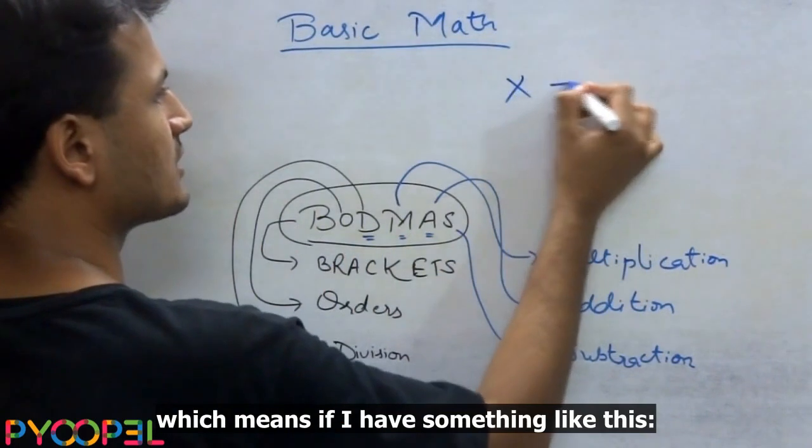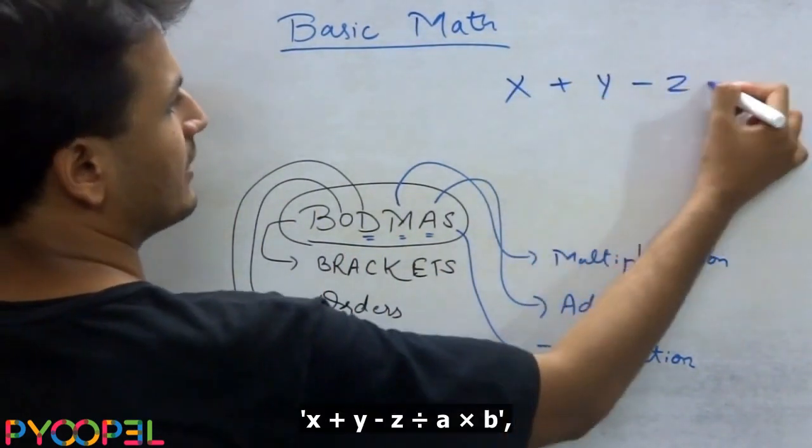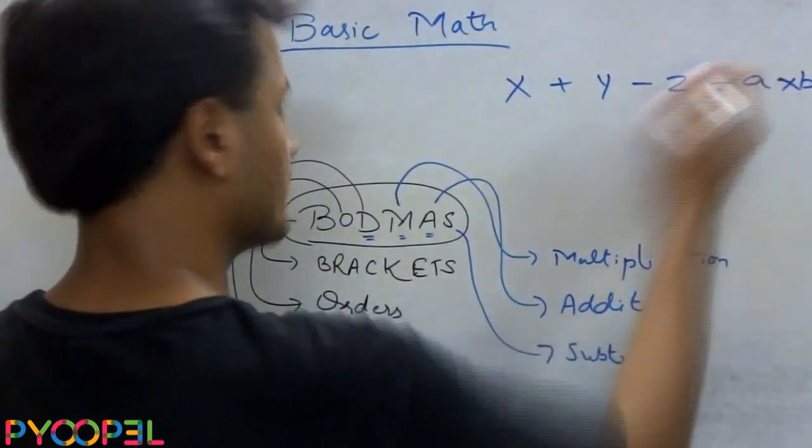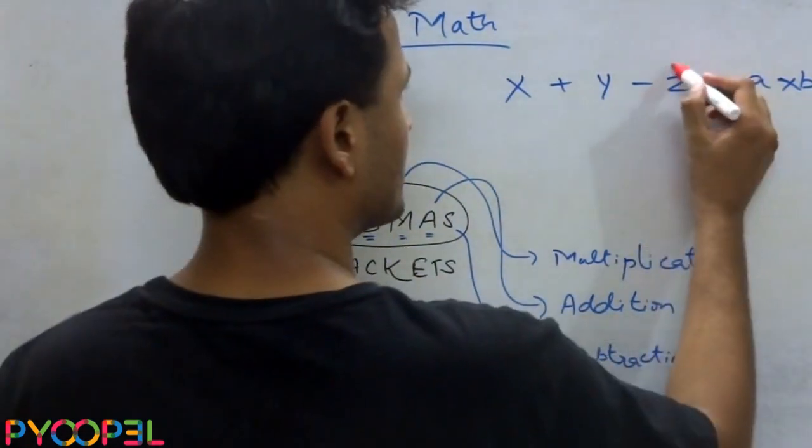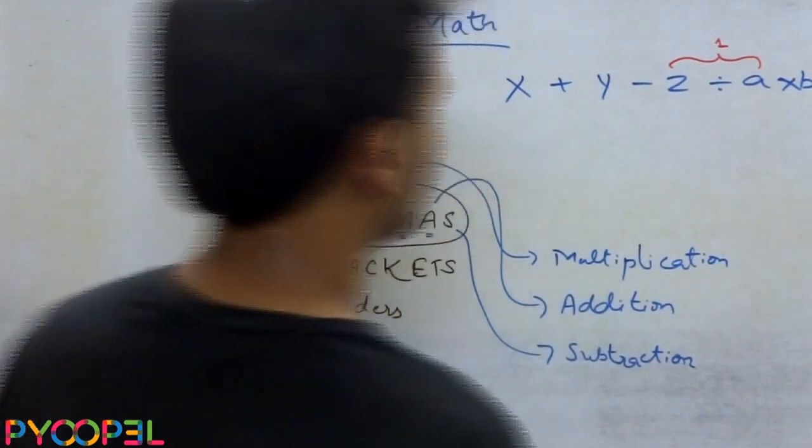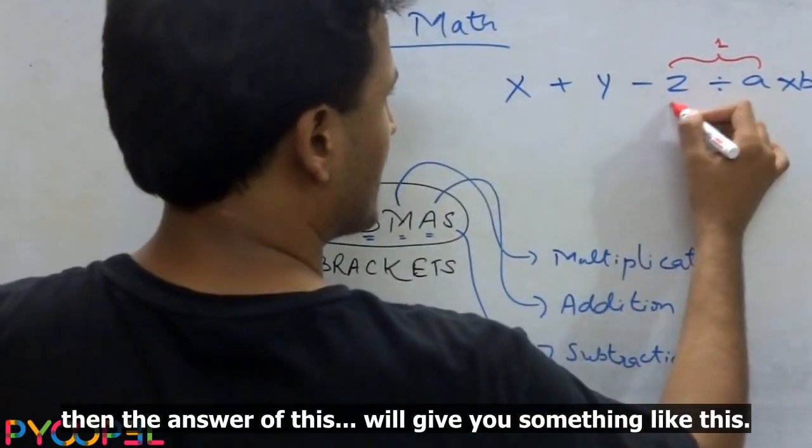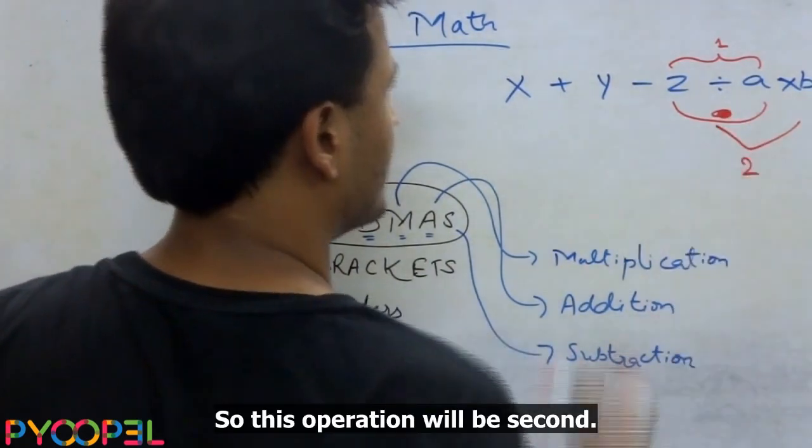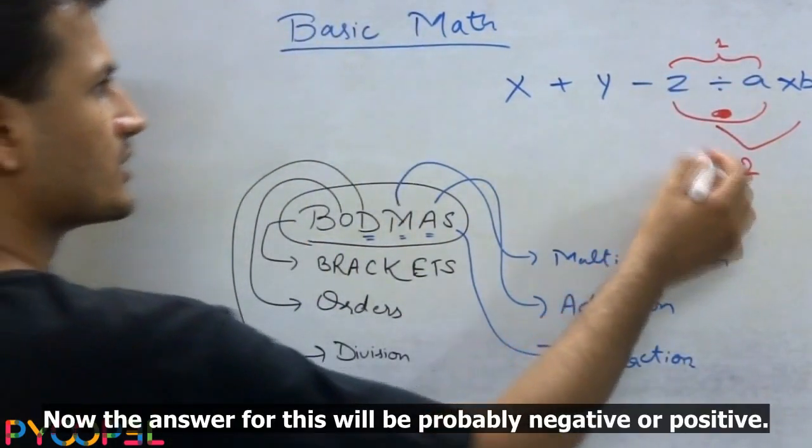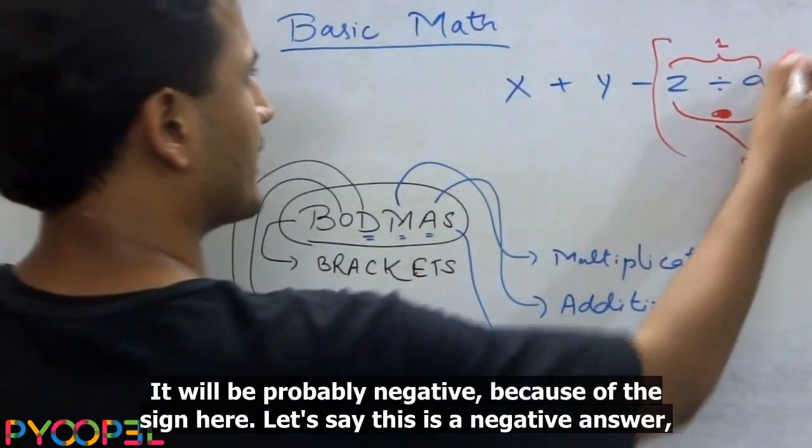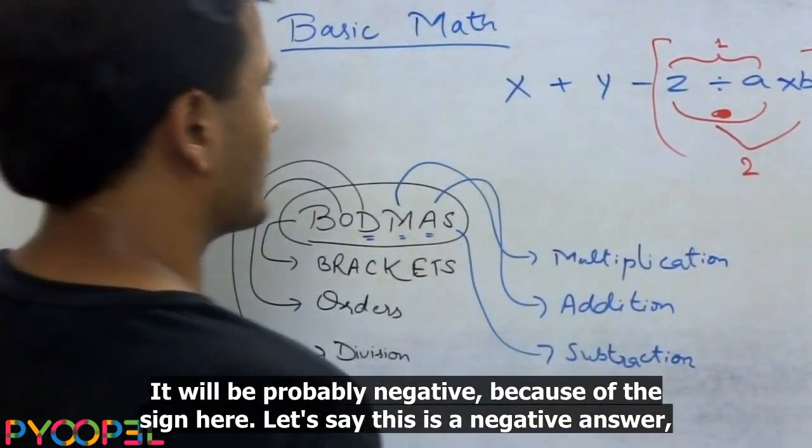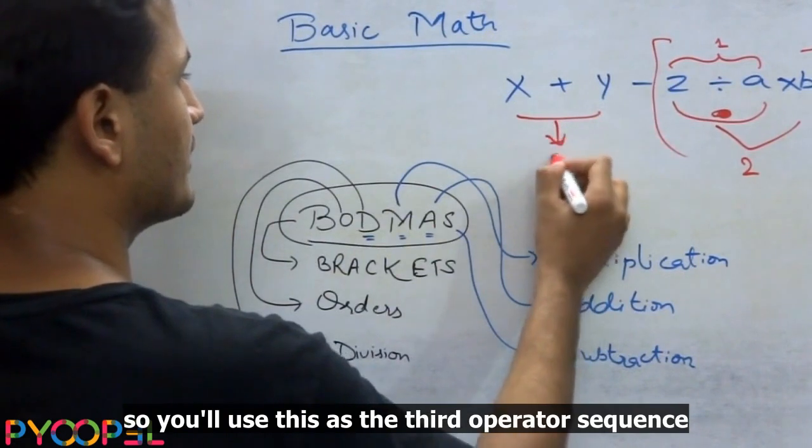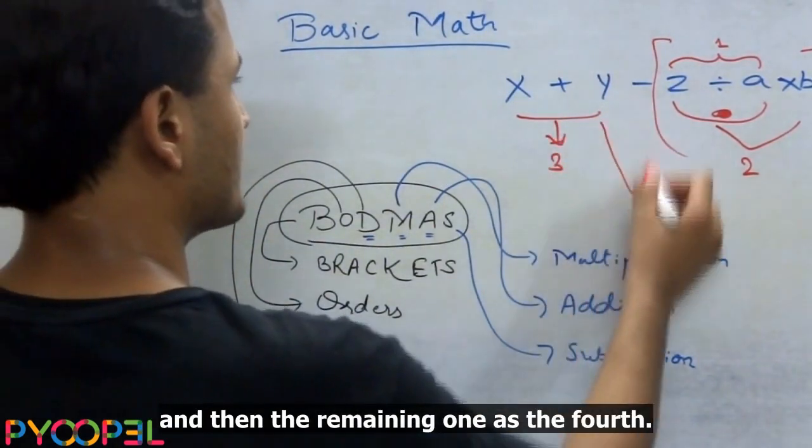Which means if I have something like this, x plus y minus z divided by A into B. Then I will do this first, this operation will be first, then the answer of this will give you something like this. So this operation will be second. Now the answer for this will be probably negative or positive, it will be negative because the negative sign is here outside. Let's say this is a negative answer, so you have x plus y minus something, so you will use this as the third operator sequence and then the remaining one as the fourth.